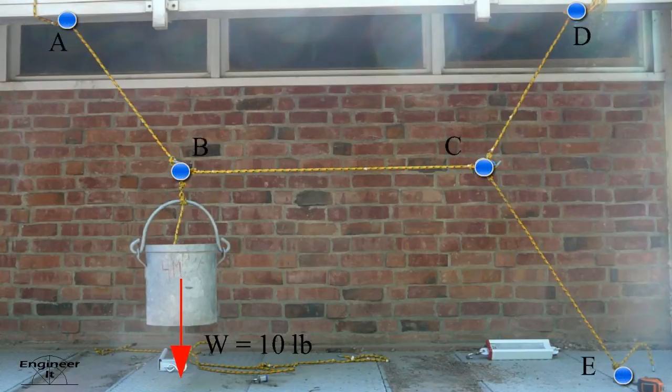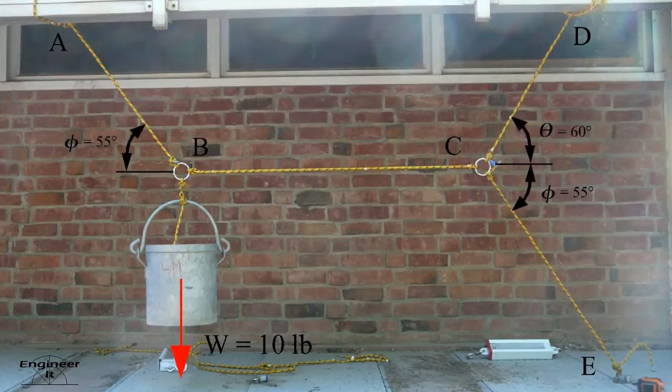First label all points of interest including the concurrent points B and C. Next measure some angles. Now start at a point that has a known force. In this case B will be the starting point.